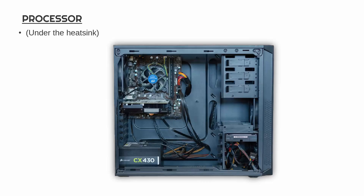Let's start with a processor. The processor is arguably the most important component, maybe apart from the power supply. You need to have a processor to do any job. The processor, you can't see it here — it's hidden under a fan. The fan is called a heat sink, because the processor gets quite warm, so the fan cools it down. We'll have a look at that a bit later.